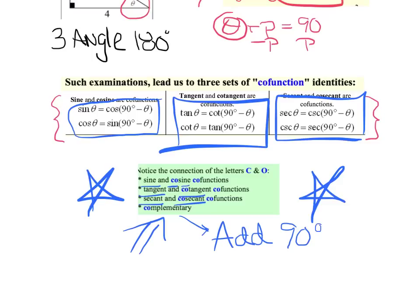The whole key is this last star here. Co-functions are complementary. Again, back to your geometry days, that means these two functions should add to 90 degrees. I just want to stress, every function you say should have a co that goes with it. And that's its co-function. Those are your co-functions, and they are all complementary. Co, add up to 90.